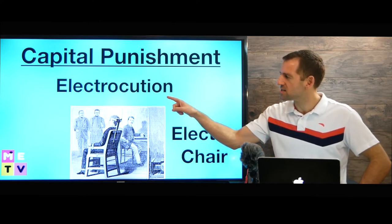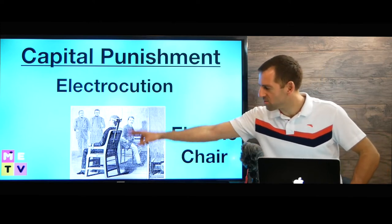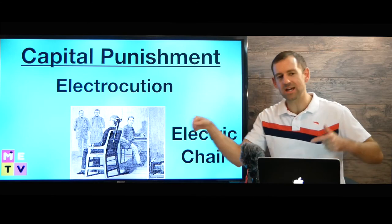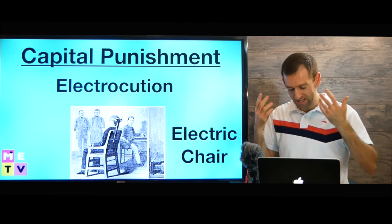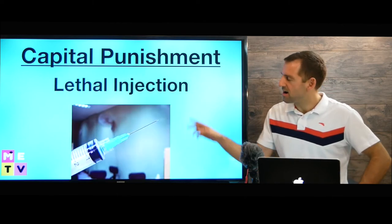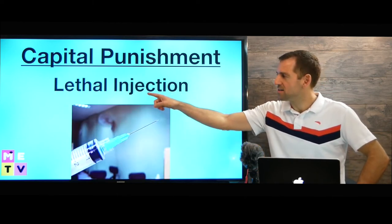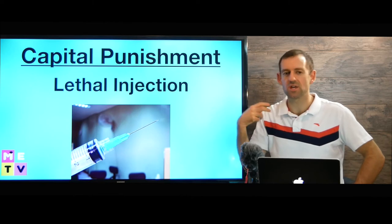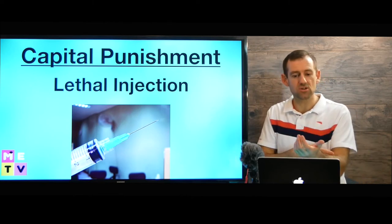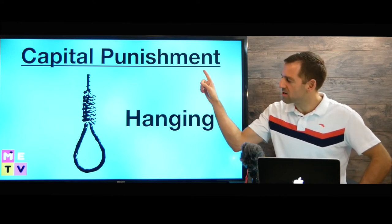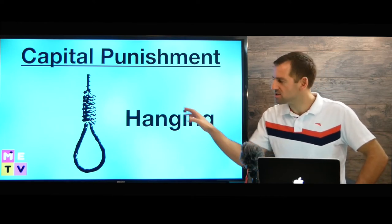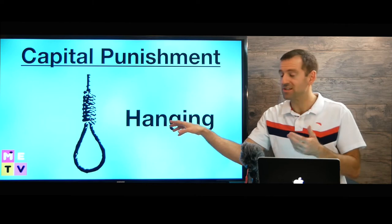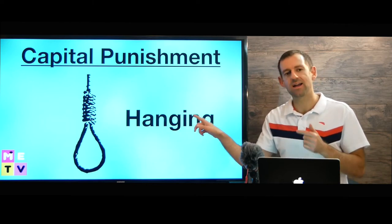One form of execution is called electrocution — that's when they put someone in a chair called the electric chair, and they kill them by running high voltage electricity through their body until they die. Another form of execution could be lethal injection. Lethal means deadly, and they inject some poison into you and then you die. Another form of capital punishment is hanging, which is very common in the Middle East.